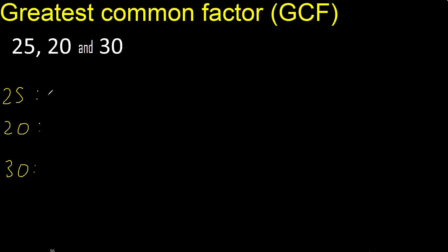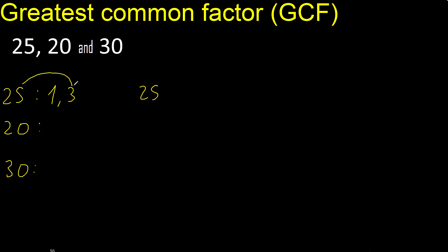Factors — always start with 1. Divided by 1 is 25. Next, cannot be divided by 2, cannot be divided by 3, cannot be divided by 4. 5, divided by 5 is 5. 5 is here.